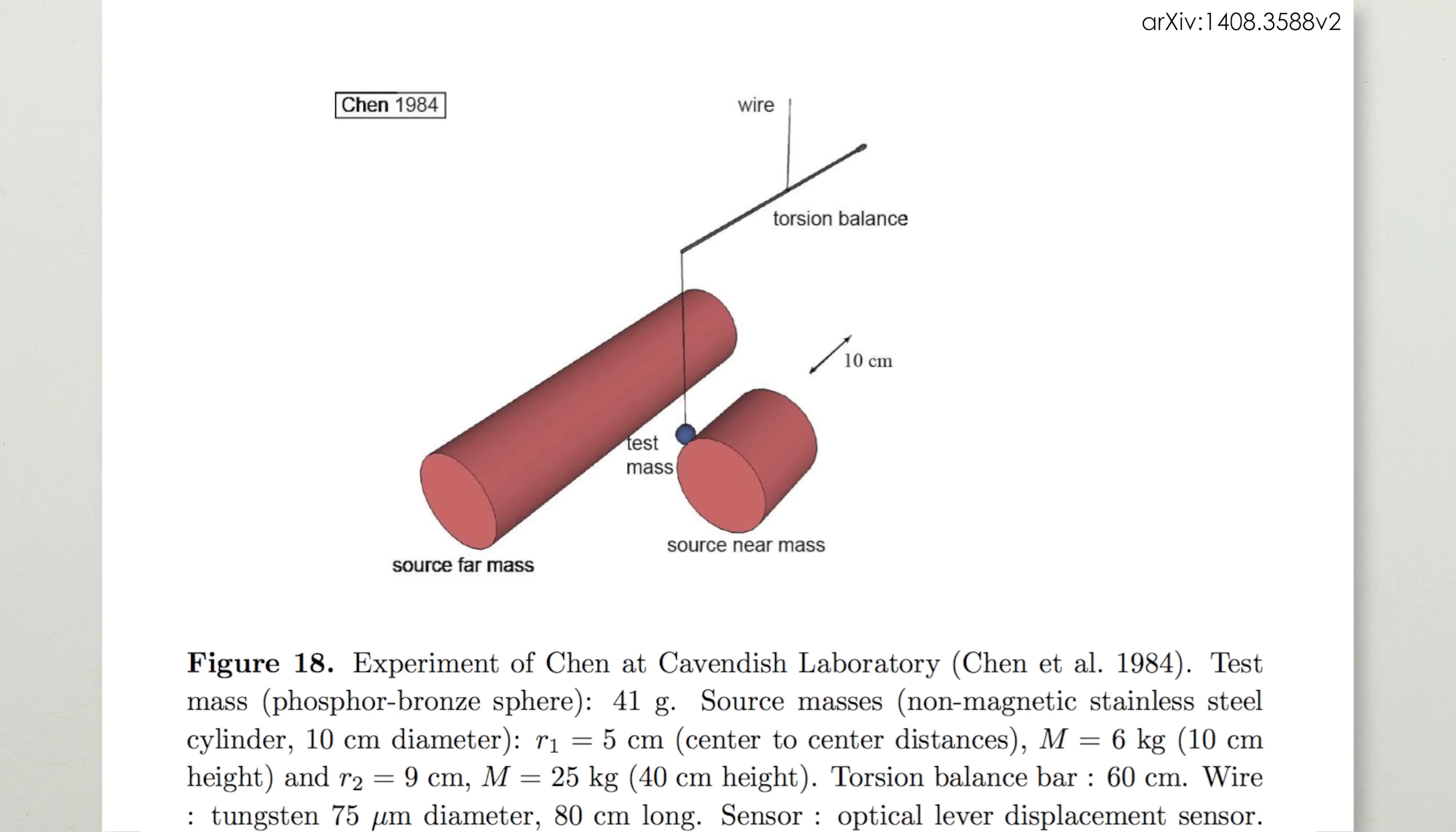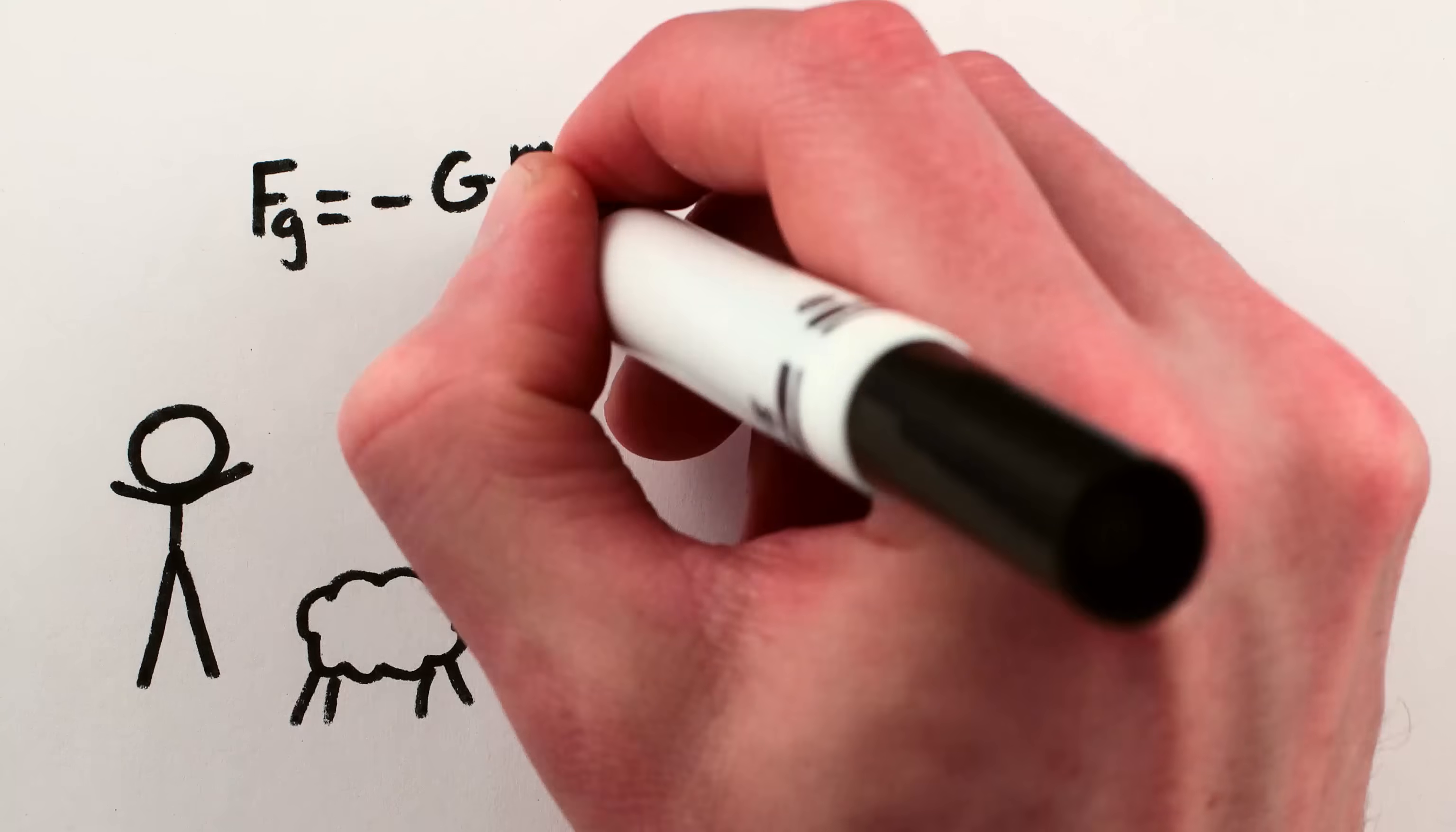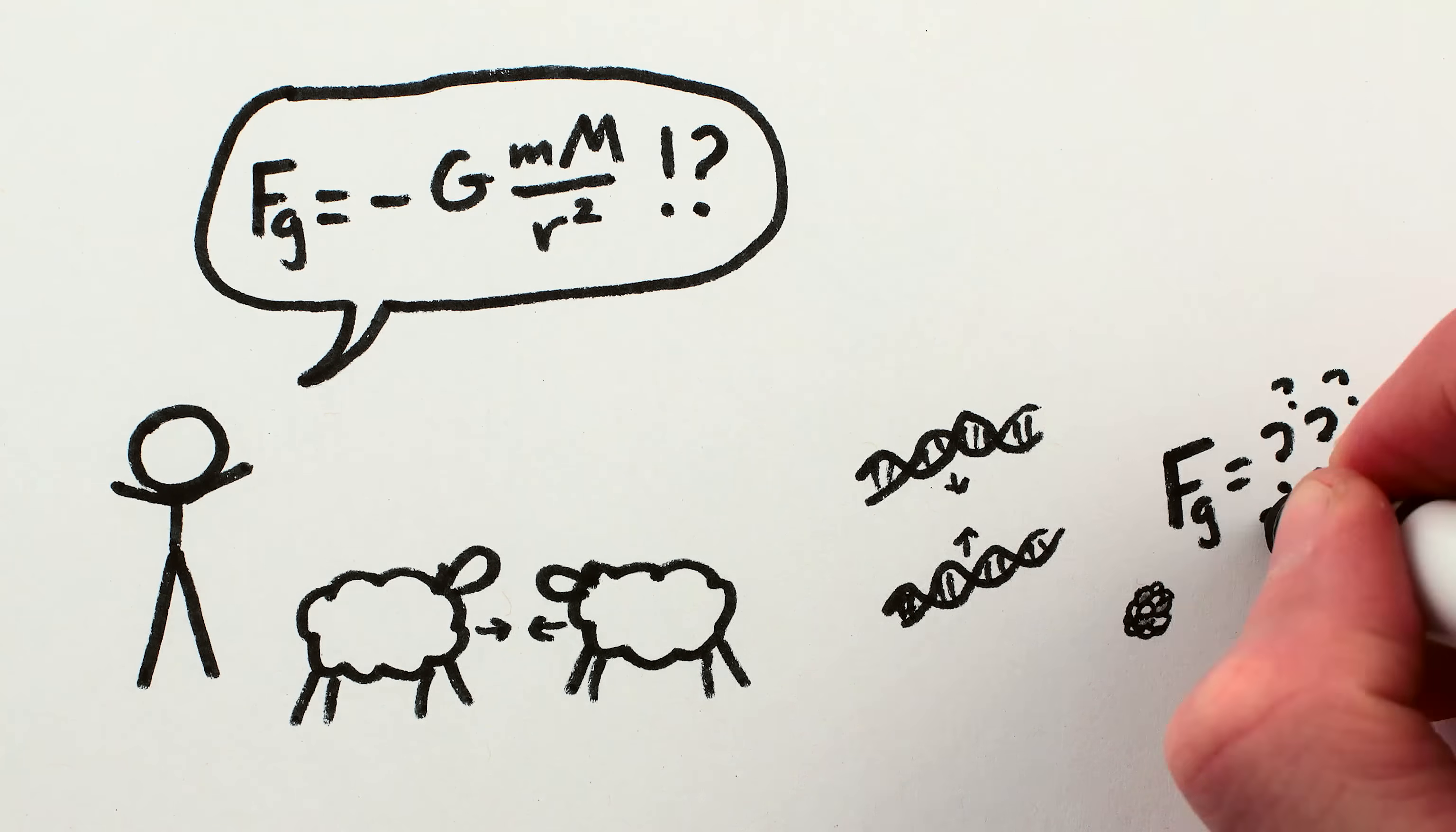However, as we've made increasingly precise measurements of the gravitational attraction between small things, we haven't yet discovered any gravitational forces inconsistent with Newton's Law of Gravitation. So it may be that negative GMm over r-squared does describe the strength of gravity for very, very short distances. But our uncertainty is still very big, and it remains pretty crazy to blindly apply Newton's Law of Gravitation to things like protons in the nucleus of an atom.